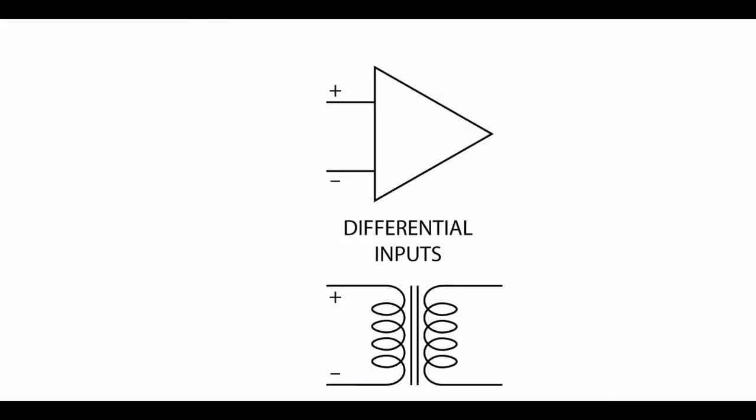Let's first take a moment to consider differential inputs and why they are used. In balanced audio circuitry and interconnection, the audio signal is applied differentially to two audio conductors, which are either unreferenced to ground or are balanced in their reference to ground.